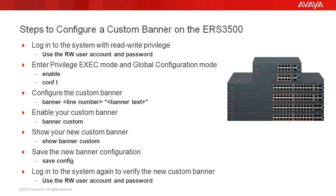We will go through the following steps to configure a custom banner on the ERS 3500. First, we'll log into the system with read-write privilege using the RW user account and password. Then, we'll enter the global configuration mode using the enable and conf t commands.